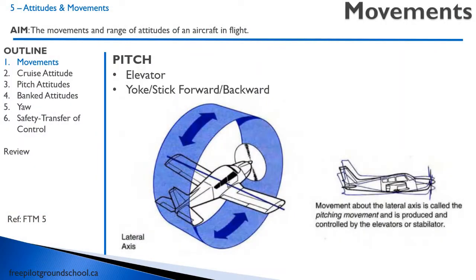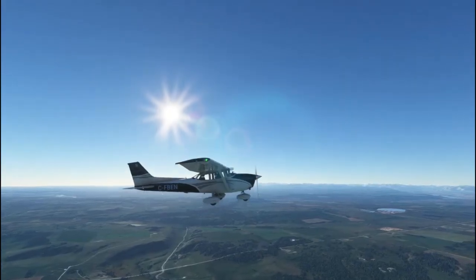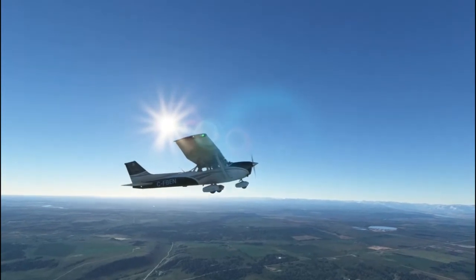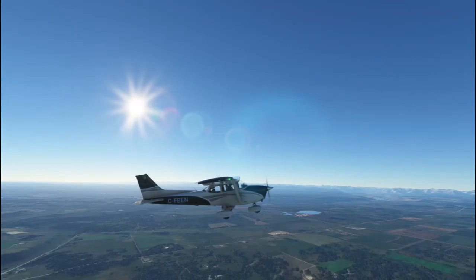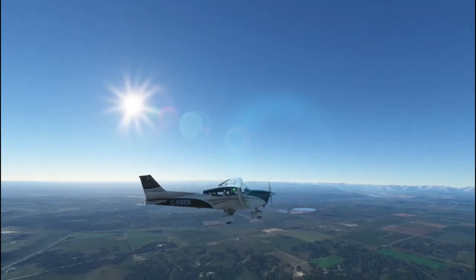First off, we have to be familiar with the three movements that are involved in the aircraft. The first one is pitch. That is the elevator on the tail of the aircraft pitching the aircraft nose up and nose down, where you can use the yoke or the stick forward and backwards. It's movement around the lateral axes. This is the aircraft pitching up and this is the aircraft pitching down.